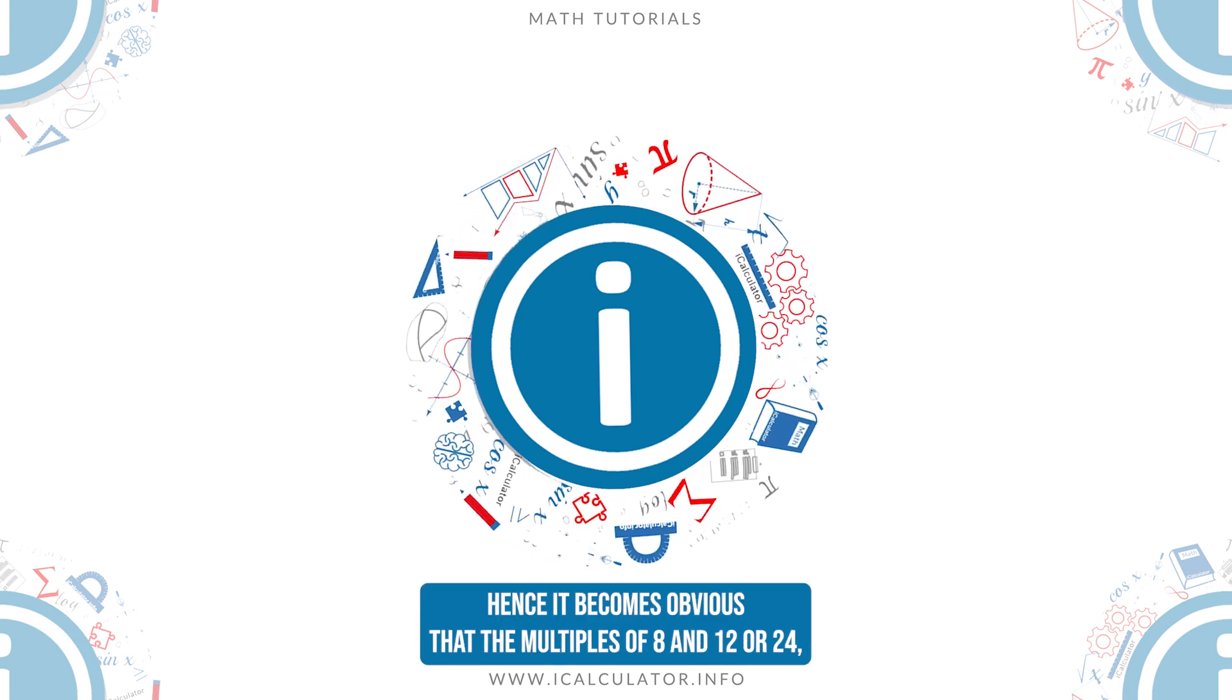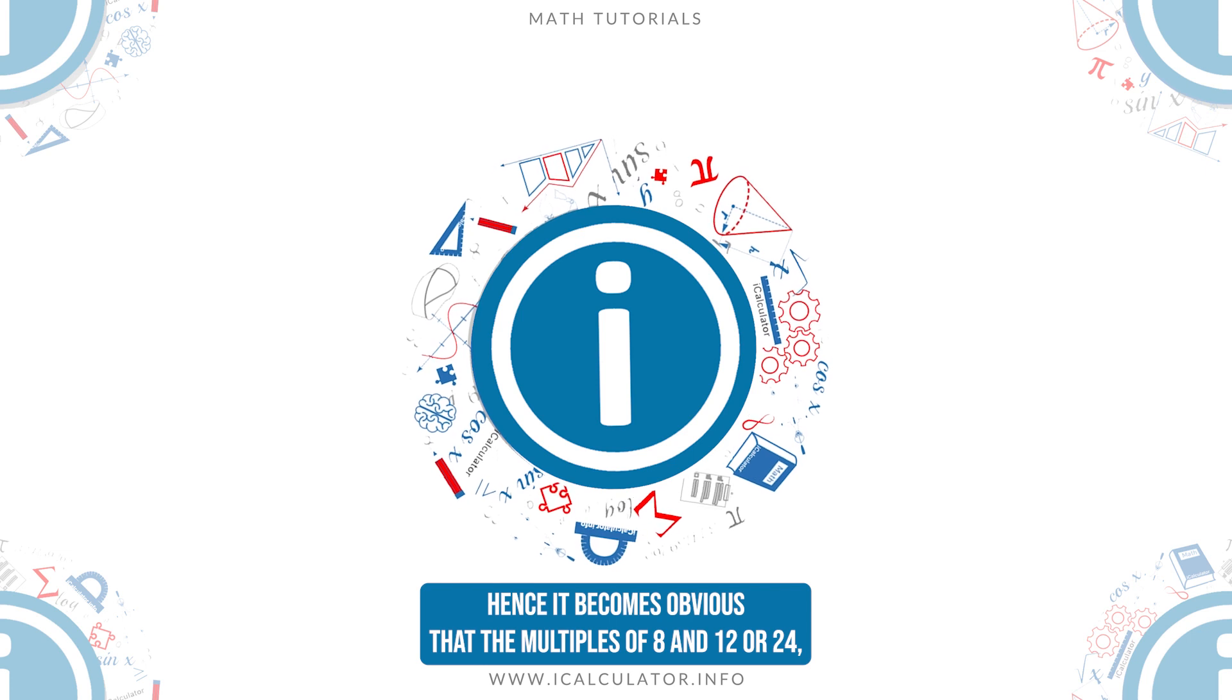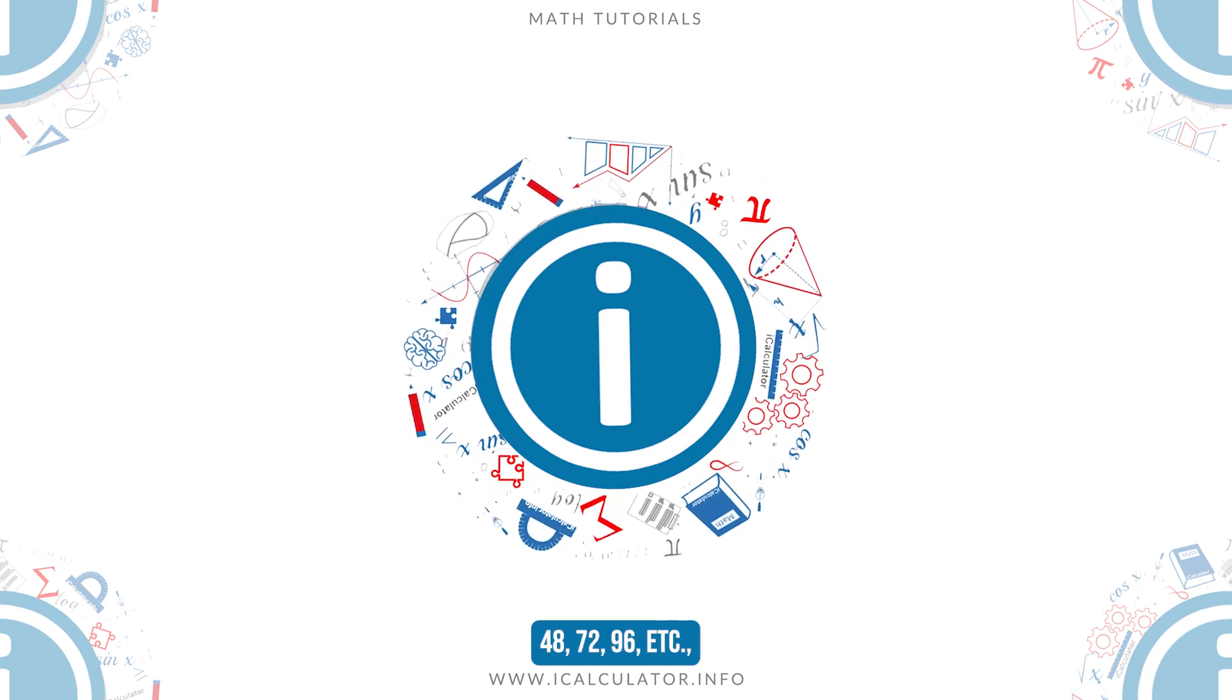Hence, it becomes obvious that the multiples of 8 and 12 are 24, 48, 72, 96, etc.